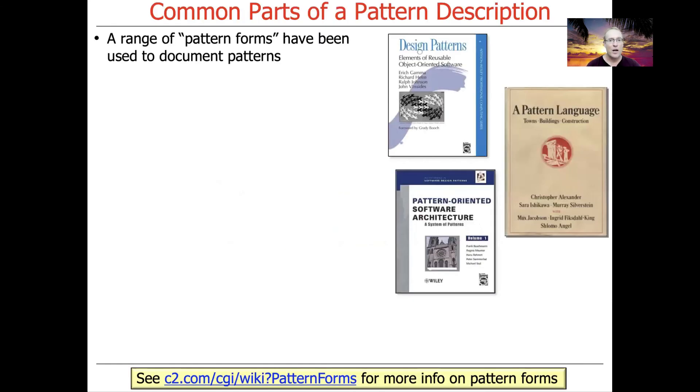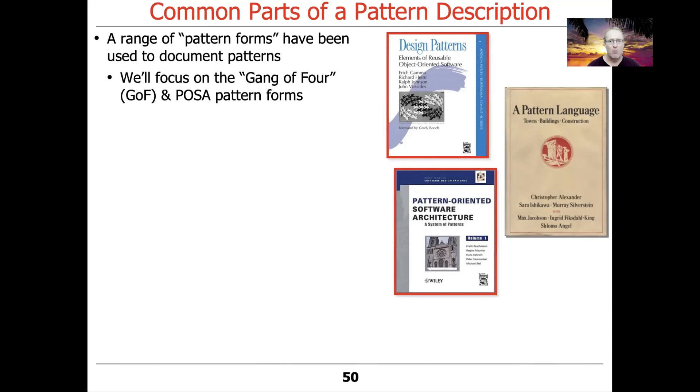There's a range of so-called pattern forms that have evolved over the past several decades. The classic one was the pattern language by Christopher Alexander, which really talks more about building architectures, not software architectures, but architectures for things like cathedrals or airports or road systems. There's also the Gang of Four pattern form, which we'll talk a lot about. There's the pattern form that appears in the various pattern-oriented software architecture books, the POSA books. These forms tend to vary a little bit in terms of specificity, but there are certain essential properties that they all pretty much have. We're going to focus primarily on the Gang of Four and POSA pattern forms here.